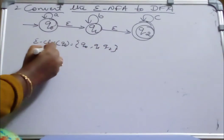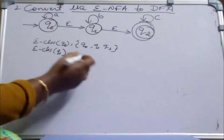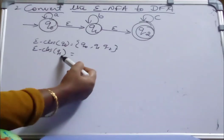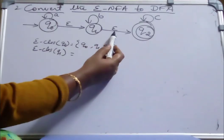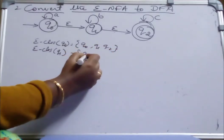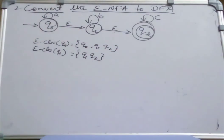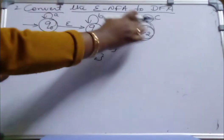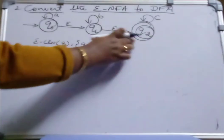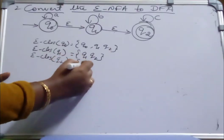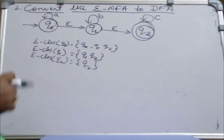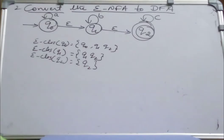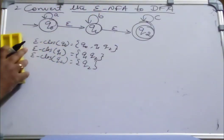What is Epsilon closure of Q1? All the Epsilon transitions reachable from Q1 form its Epsilon closure. Q1 on Epsilon transition is moving to Q2. So Epsilon closure of Q1 is {Q1, Q2}. What is Epsilon closure of Q2? We don't have any Epsilon transitions from Q2, so it is Q2 itself. This is how we write the Epsilon closures for Q0, Q1, and Q2, and with this basic idea we will try to convert this NFA to DFA.